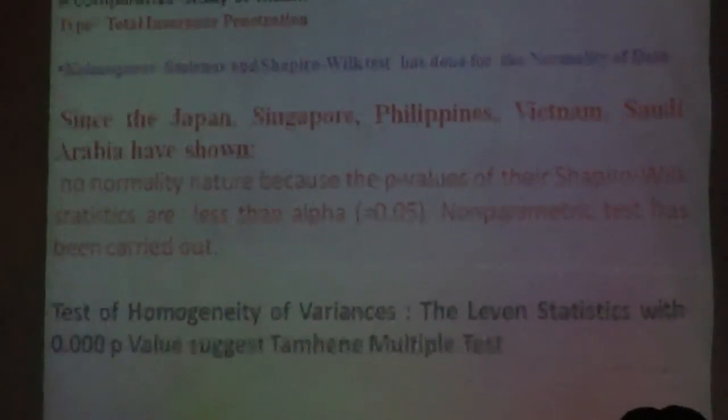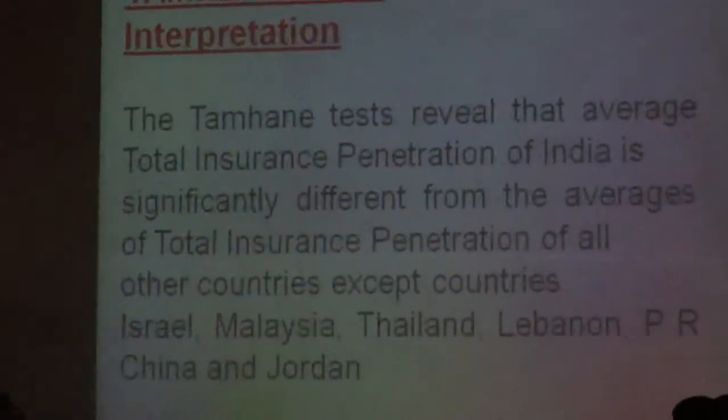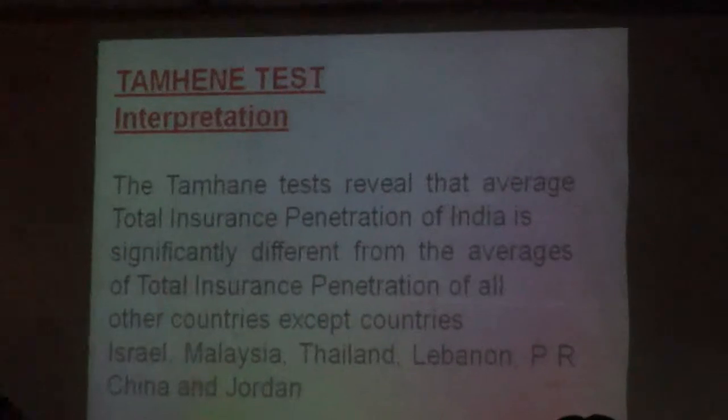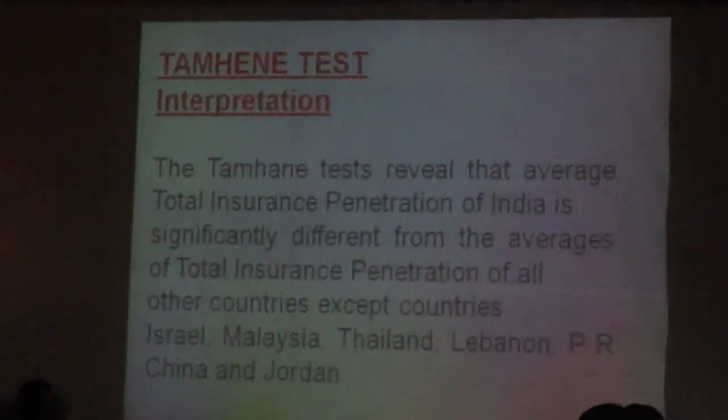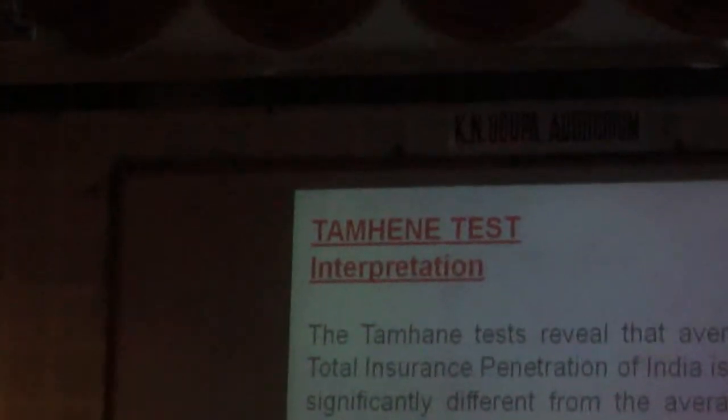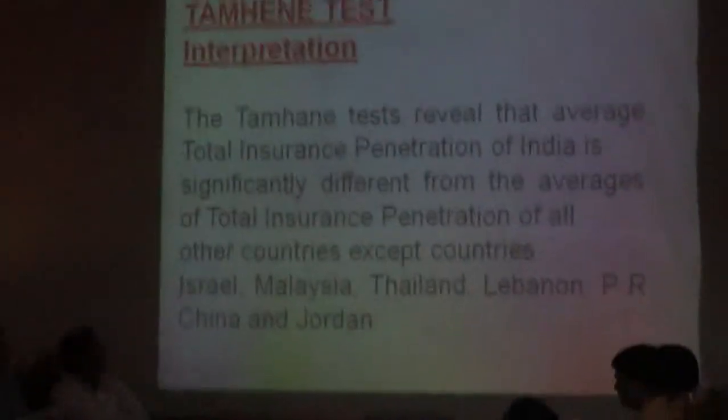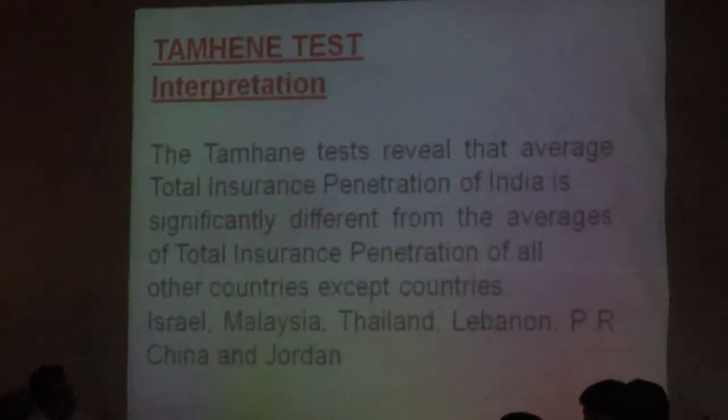A comparative study of Indian insurance penetration to other countries: Kolmogorov-Smirnov and Shapiro-Wilkinson tests were done for normality. Since Japan, Singapore, Philippines, Vietnam, and Saudi Arabia showed no normality — with p-values less than 0.05% — a non-parametric test was carried out. The Levene's test showed a p-value of 0.000. The Tamhane multiple comparison test reveals that the average total insurance penetration of India is significantly different from all other countries except Israel, Malaysia, Thailand, Lebanon, People's Republic of China, and Jordan.